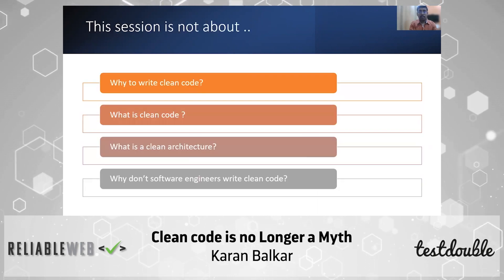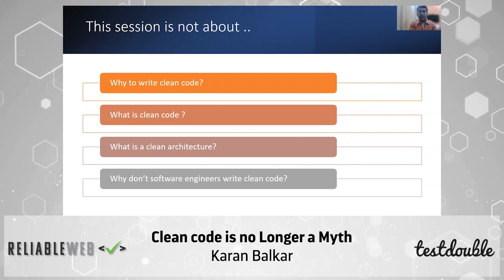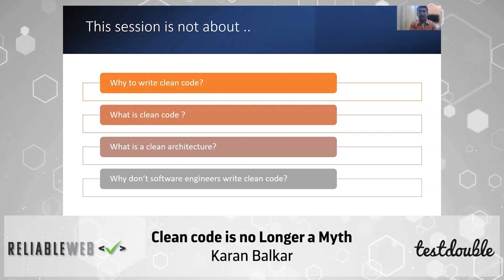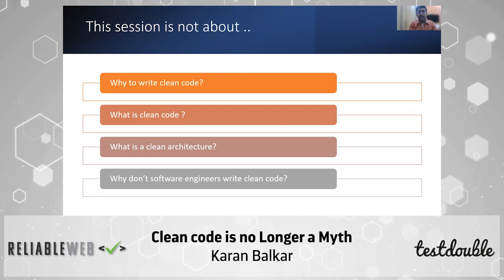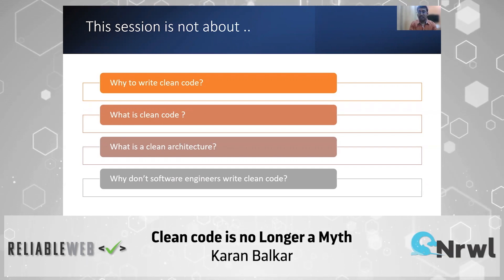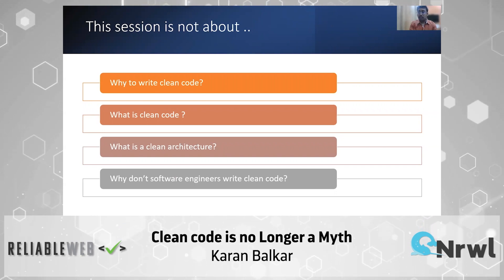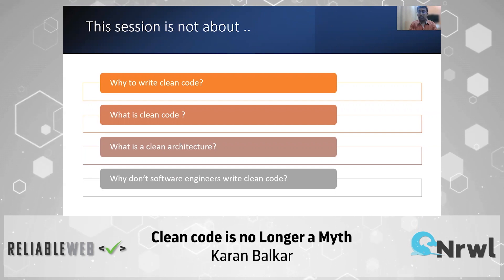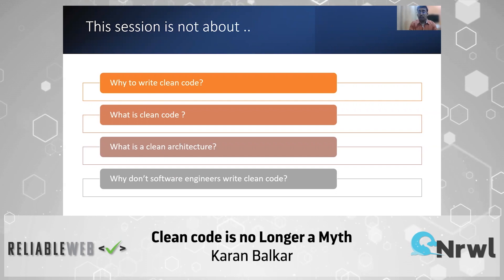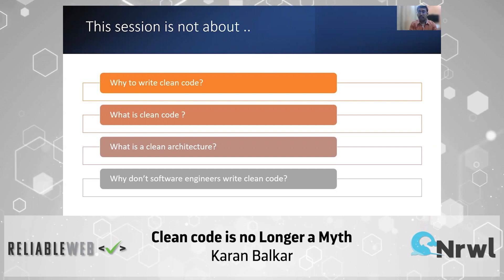Before we move on to the main topic, here is a short disclaimer. This session is not about why to write clean code, and neither does it try to answer what clean code or clean architecture is. This session also doesn't provide information about why software engineers don't write clean code. The main objective is to help software developers achieve one task that most of them even today think is far-fetched — writing clean code.